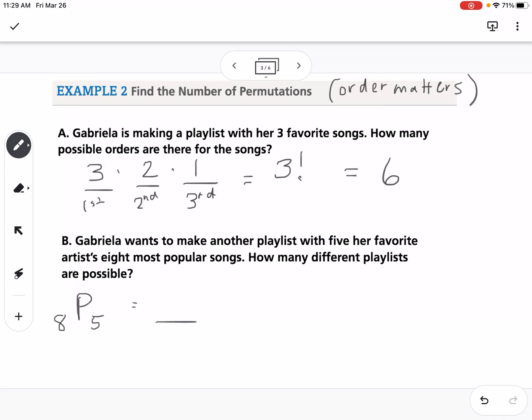We could say, okay, there's eight choices, seven, six, five, four. We could multiply those numbers together. That's the five song slots, and I have eight to choose from, and so on down. That would give me 6,720.